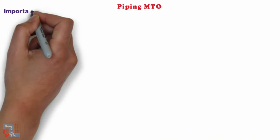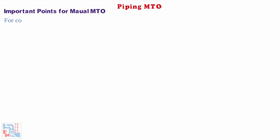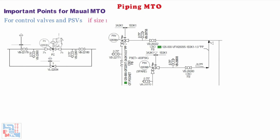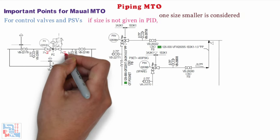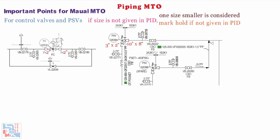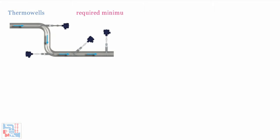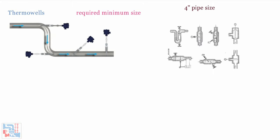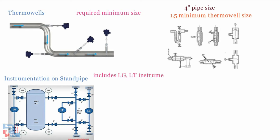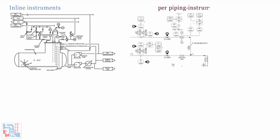Now let's look at some important points to remember while calculating manual MTOs. For control valves and PSVs, if size is not given in the P&ID, one size smaller is considered, and mark hold if not given. Consider end user requirements of instrument air supply lines or manifolds as per project standards. Thermowells require a minimum size — for example, a minimum 4-inch pipe size requires a 1.5-inch minimum thermowell size. MTO for instrumentation on standpipes, which includes LG and LT instruments, vent and drain, and standpipe, is taken as per P&ID or standard assembly. MTO for inline instruments is properly considered as per the piping-instrument interface diagram.